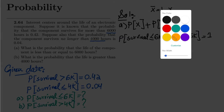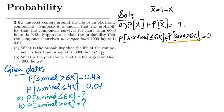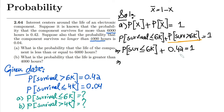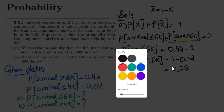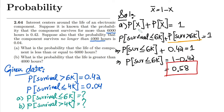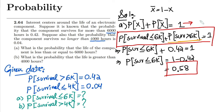Putting in the known values: P(X ≤ 6000) + 0.42 = 1. Subtracting 0.42 from both sides gives P(X ≤ 6000) = 1 − 0.42 = 0.58. So 0.58 is the answer to part a.